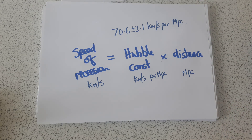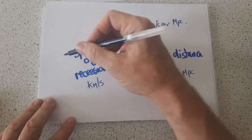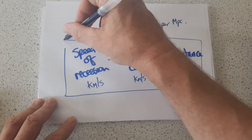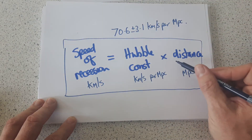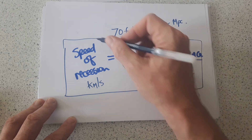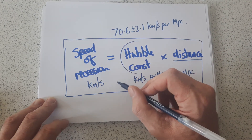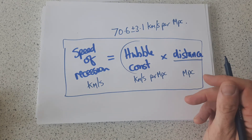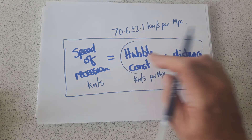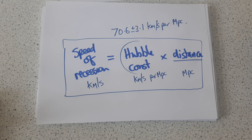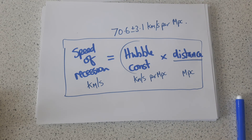So that is Hubble's law. You may be asked to calculate the distance to a galaxy by knowing the Hubble constant and measuring the speed of recession, or vice versa — calculate the speed of recession knowing those two values — or even to recalculate a new version of the Hubble constant.